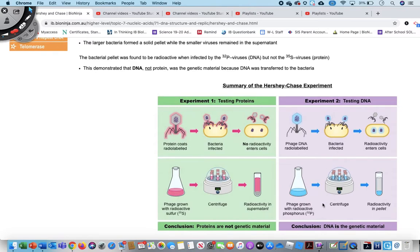For experiment two, we see that after the phage was grown with the radioactive phosphorus-32 and it was centrifuged, that means the viral particles and the bacterial particles were separated. You could see that the supernatant, or the lighter liquid here at the top that carries the virus, was not radioactive, because it was not the proteins that were labeled, but actually the DNA.